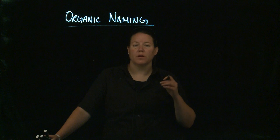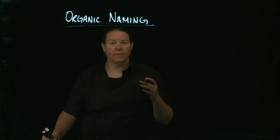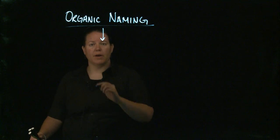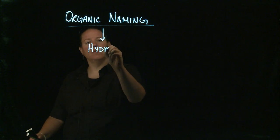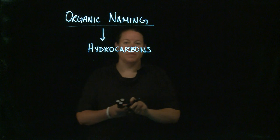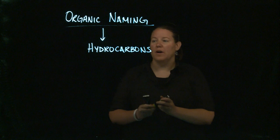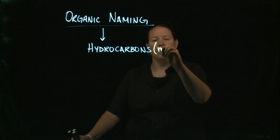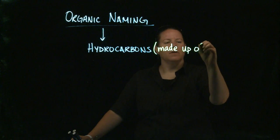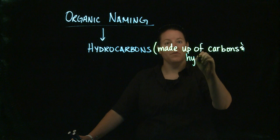In organic naming there are several different components because there's a huge number of compounds, so we're going to start with the simplest. We're going to focus on a particular group of compounds called hydrocarbons. That's an extremely accurate name because hydrocarbons are composed of carbons and hydrogens — hence the reason why they're called hydrocarbons.